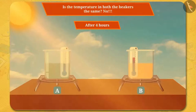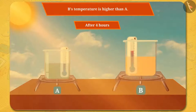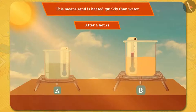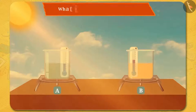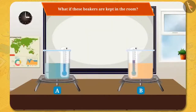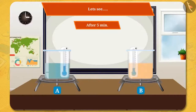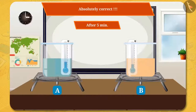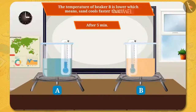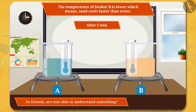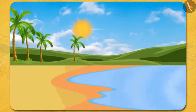Is the temperature in both beakers the same? No. Beaker B's temperature is higher than A. This means sand is heated more quickly than water. But what if these beakers are kept in the room? The temperature of beaker B is lower, which means sand cools faster than water. So friends, sand heats and cools down faster than water.